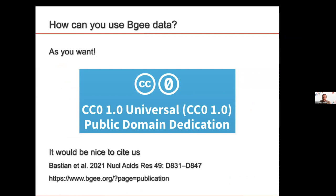Of course, we would appreciate if you cite us in your publication when you make use of our data, but it's not mandatory. The advantage of this license is that we can then provide our data in a variety of tools that require CC0 data — for instance, Wikidata, which is the backbone for Wikipedia for producing structured data. Wikidata requires all structured data to be CC0 to allow integration of any data there.